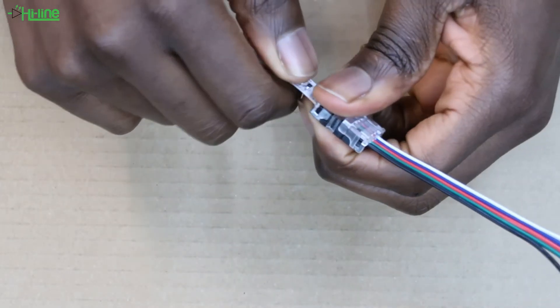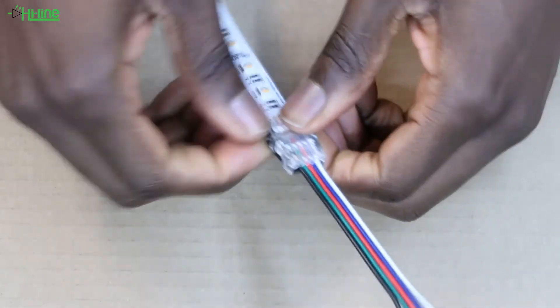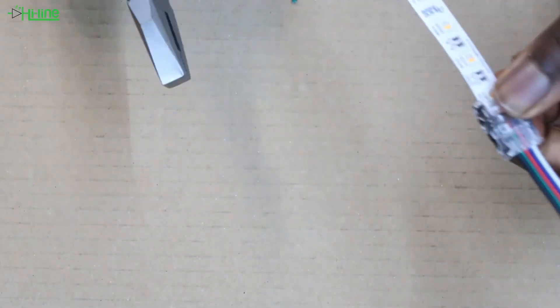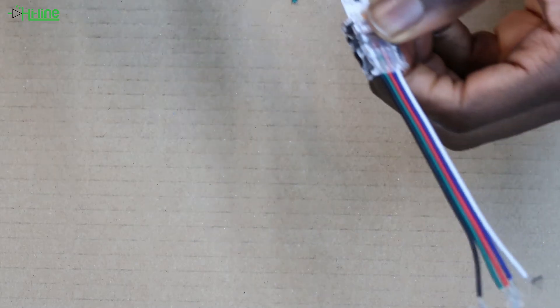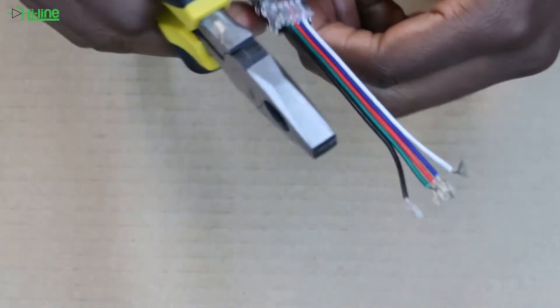Once you've done that, you can go ahead and close the connector. Once again, you might struggle to do it with your hands, so you can grab a set of pliers and gently close each side of the connector.